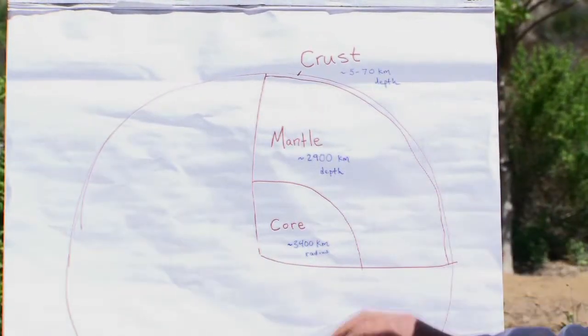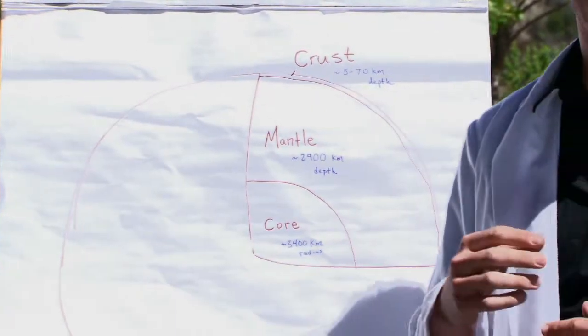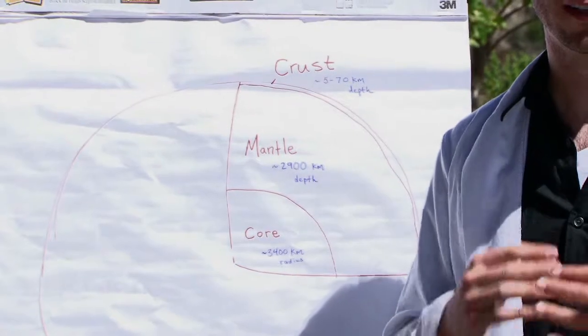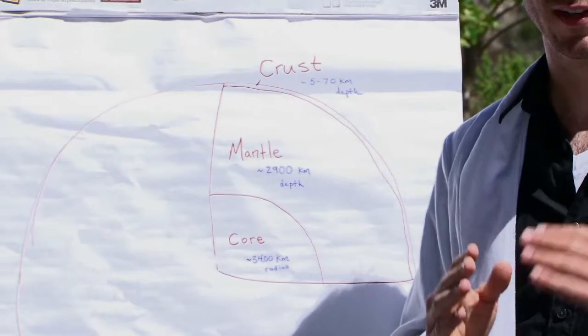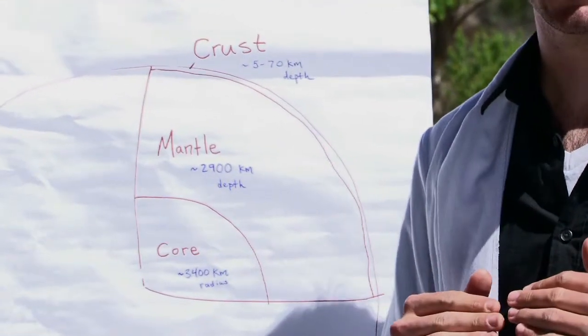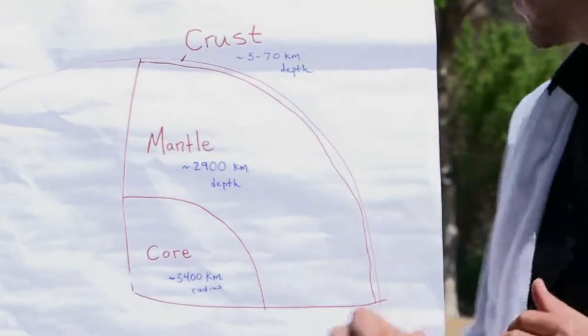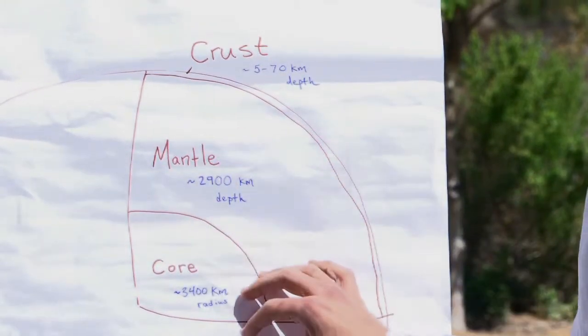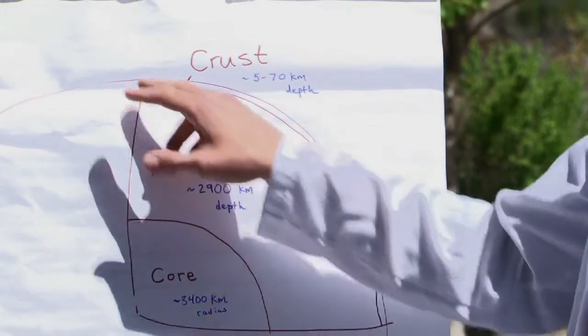Outside that is the mantle. The mantle is mostly kind of like a liquid — kind of like a solid that acts like a liquid, a ductile solid — but this is magma. This is liquid rocks that are superheated.